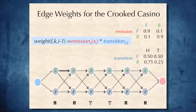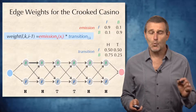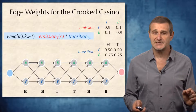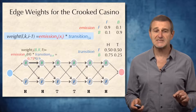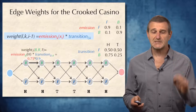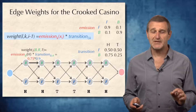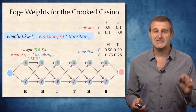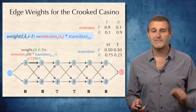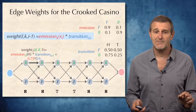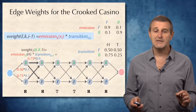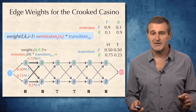Let's see how we would assign edge weights. As before, the weight of an edge from state L equals the product of the corresponding emission and transition probabilities. For example, the weight of the edge from state B to state B equals the emission probability of emitting symbol H from state B multiplied by the transition probability of moving from B to B, which is 0.75 multiplied by 0.9. We continue assigning probabilities to all edges in a similar fashion.